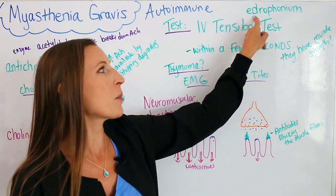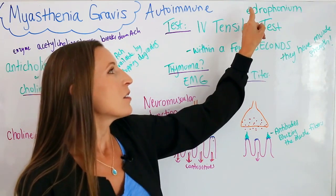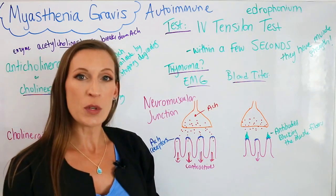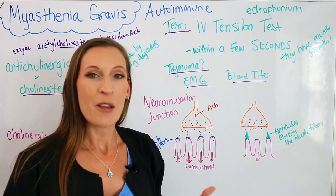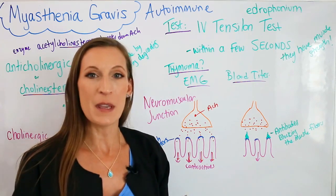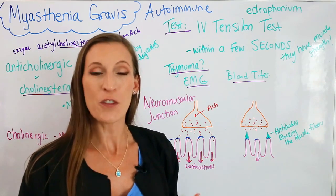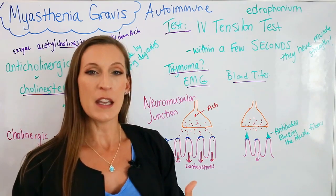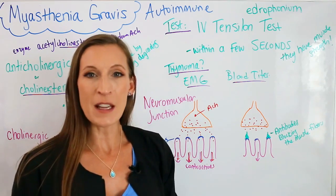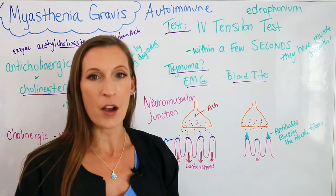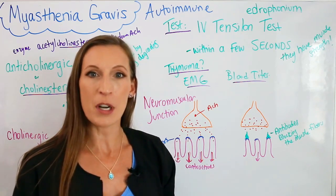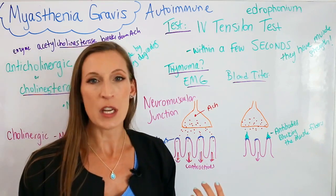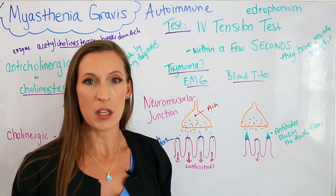You do need to remember the generic name, edrophonium, and it's given IV. As soon as it's given IV, the patient has immediate muscle strength again — it only takes a few seconds. They'll have the patient do a few tests, and then after about five minutes it wears off and they're back to how they were. That is a positive test and it pretty much confirms myasthenia gravis.